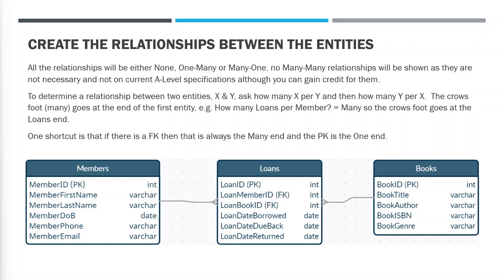Finally, creating the relationships between the entities. There are four types: none, one-to-many, many-to-one, and many-to-many. Just ask two simple questions. Taking loans and members: how many members per loan? The answer is one, so we put one on the member end. Then ask the opposite: how many loans per member? The answer is many, so we put the crow's foot on the loans end. Continue asking these questions between each pair of entities. If any answer is none, draw no line. If both answers are many, you could draw a line with two crow's feet, but it's better to avoid that as it tends to be confusing.